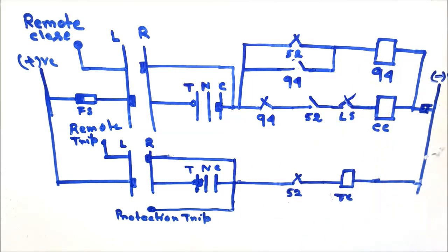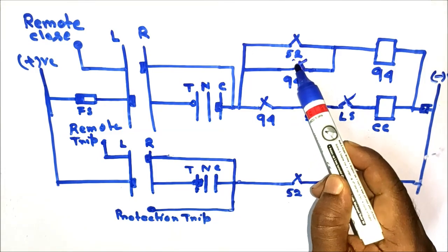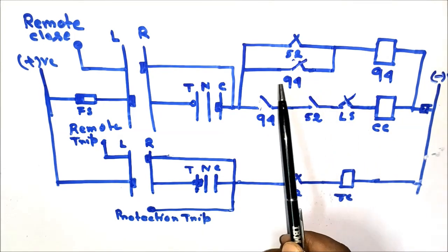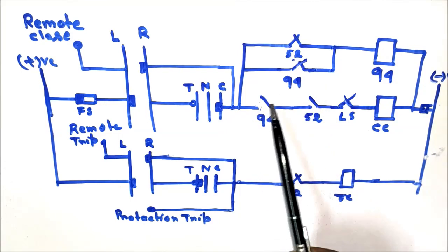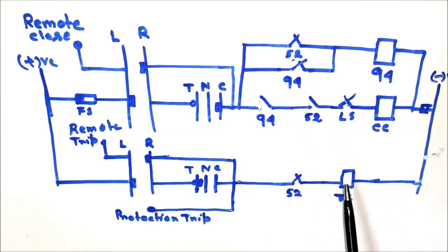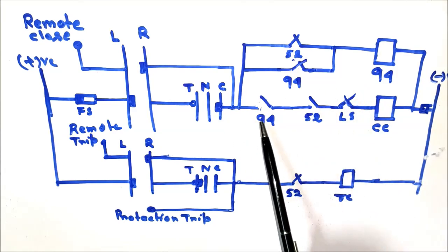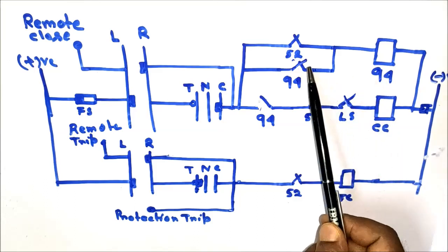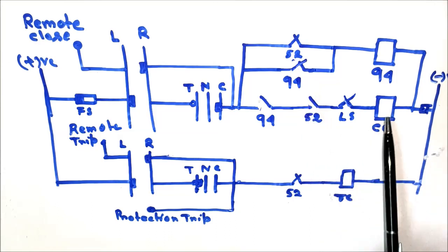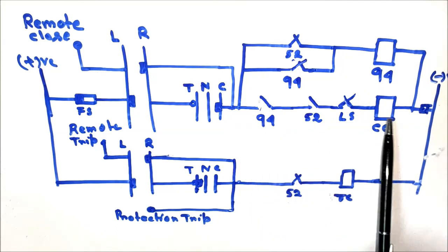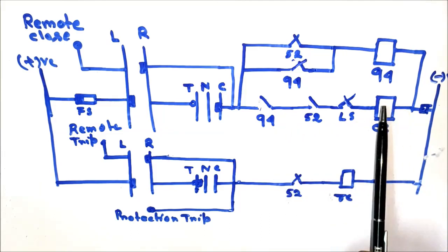As soon as this coil is energized, the auxiliary contacts will change their states from NO to NC position — the first auxiliary contact comes to NC position and the other auxiliary contact comes to NO position. Since this auxiliary contact comes to the NO position, the anti-pumping relay will remain in the energized condition via its own auxiliary contact. So if the circuit breaker is tripped under fault conditions, the DC pulse does not come to the closing coil of the circuit breaker. Rather, the anti-pumping relay remains energized by its own contact. This is the function of the anti-pumping relay — it prevents multiple pulses to the closing coil of the circuit breaker and only allows a single pulse to the closing coil.